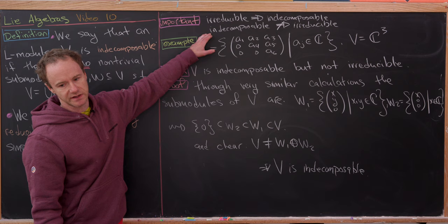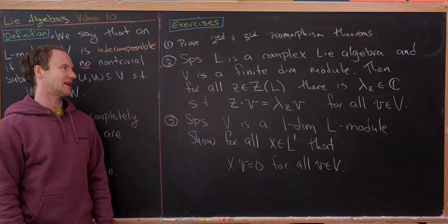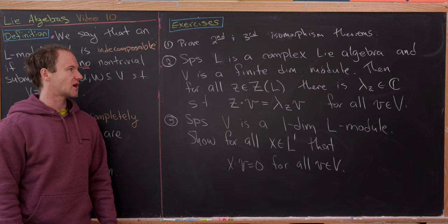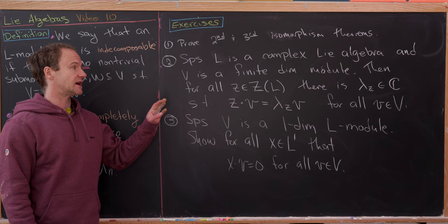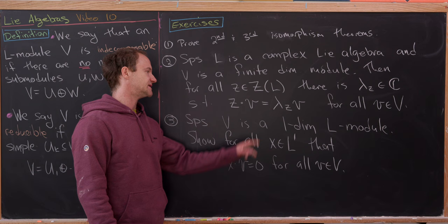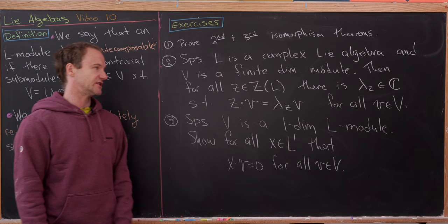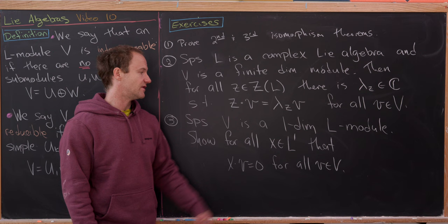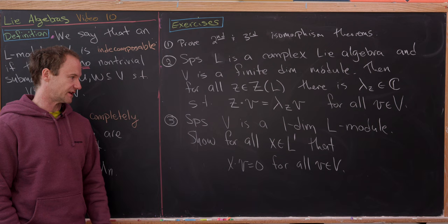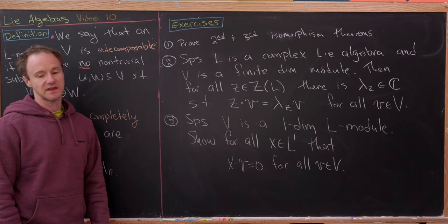Here are three exercises. First, provide full proofs of the second and third isomorphism theorems. Second, suppose L is a complex Lie algebra and V a finite-dimensional simple module; show that for all z in the center of L, there exists λ_z such that z·v = λ_z·v for all v in V. Third, for a one-dimensional L-module V, show that x·v = 0 for all x in the derived subalgebra — i.e., the derived subalgebra acts trivially on any one-dimensional module.